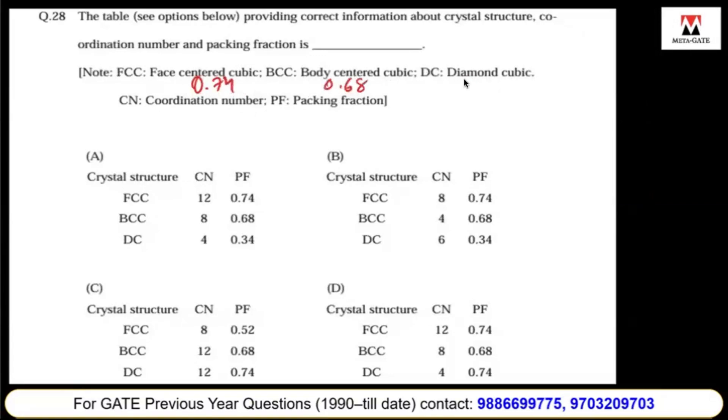In diamond cubic, carbon atoms occupy corners and face centers and alternate tetrahedral voids, so each carbon is surrounded by four atoms. The coordination number is the number of nearest neighbors: for diamond cubic it's four, for BCC it's eight, and for FCC it's twelve.